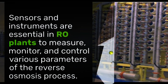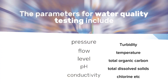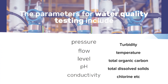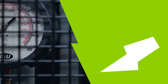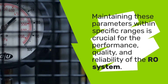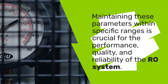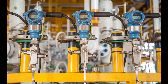However, operating an RO plant is not an easy task. It requires careful monitoring and control of various parameters, such as pressure, flow, level, pH, conductivity, turbidity, temperature, total organic carbon, particle count, total dissolved solids, and chlorine. These parameters affect the performance, efficiency, and lifespan of the RO membrane and the overall system. That's why it is essential to use appropriate instruments and sensors to measure and regulate these parameters.